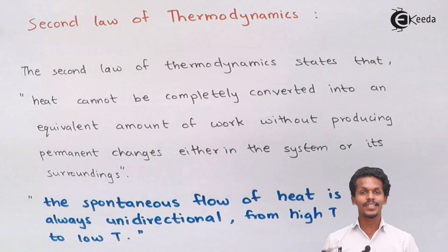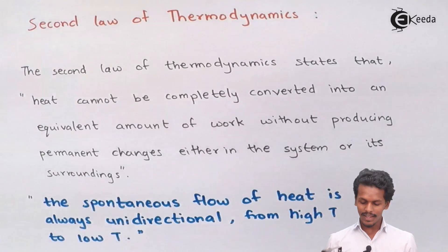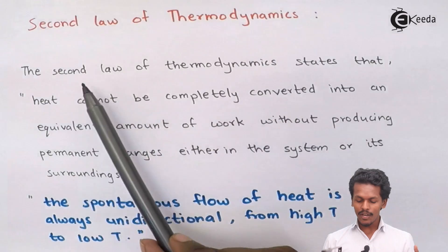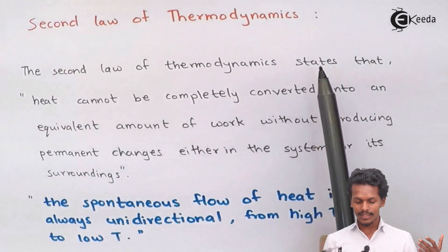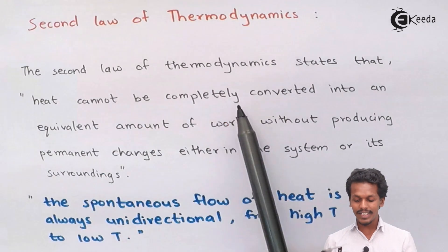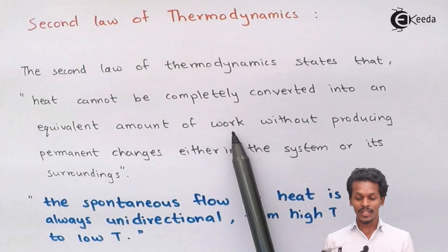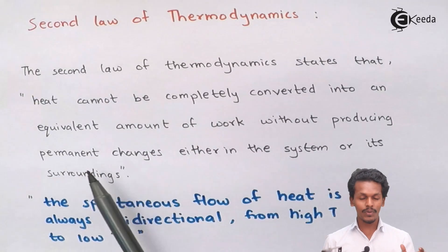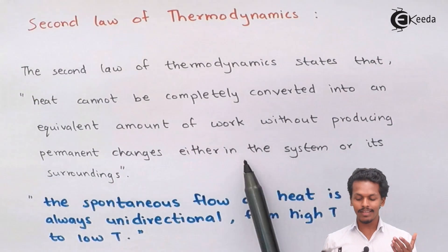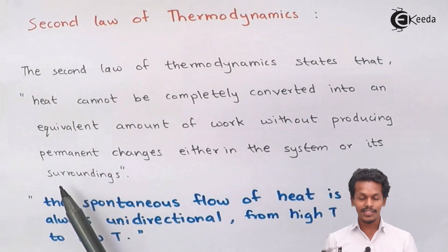So friends, let us start with what the second law of thermodynamics means. The statement is as follows: the second law of thermodynamics says that heat cannot be completely converted into an equivalent amount of work without producing permanent changes either in the system or its surroundings.